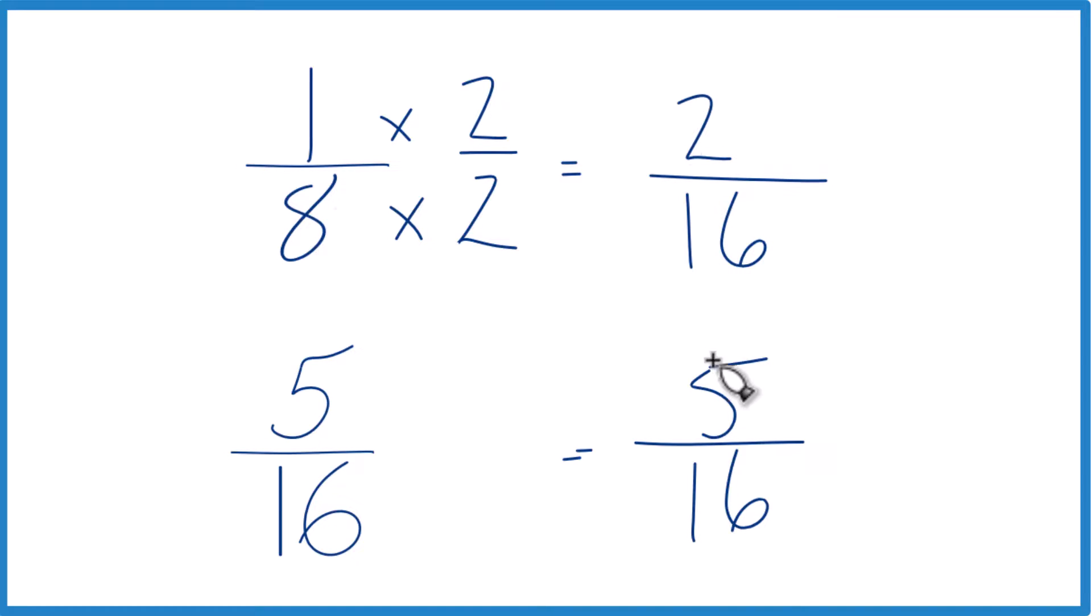But now I can compare these numerators since the denominators are the same. And you can see that 5 is larger than 2. So 5 sixteenths is larger than 2 sixteenths. It's actually 3 sixteenths larger. And that means 5 sixteenths is also larger than 1 eighth. So it's greater than 1 eighth.